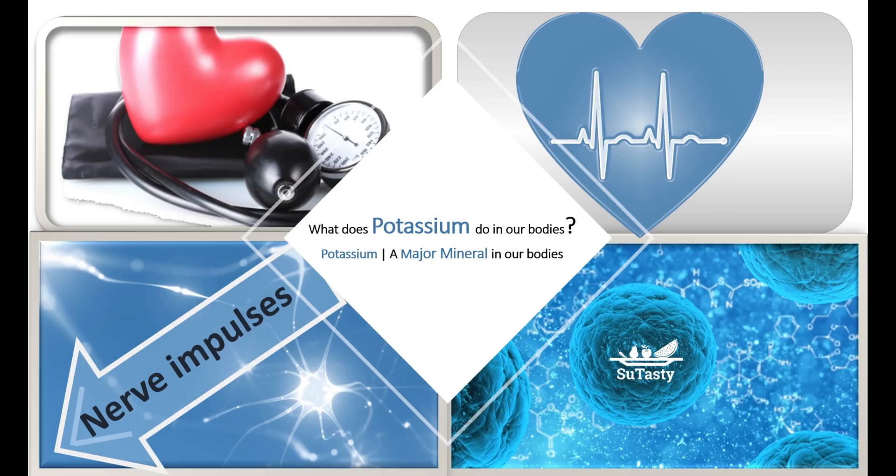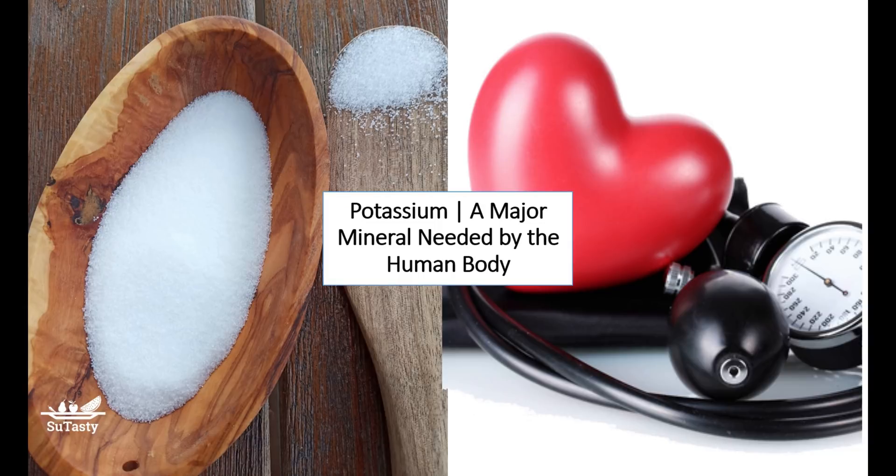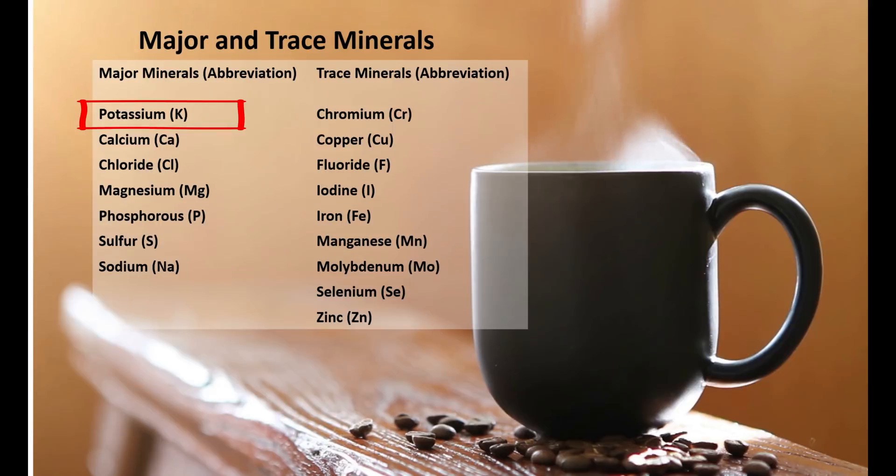Potassium is one of the seven major minerals needed by human bodies. Potassium, sodium, and chloride are also collectively called electrolyte minerals. They are the major extracellular ions regulating the fluid balance in and out of human body cells and transmitting nerve or electrical impulses in the human body.